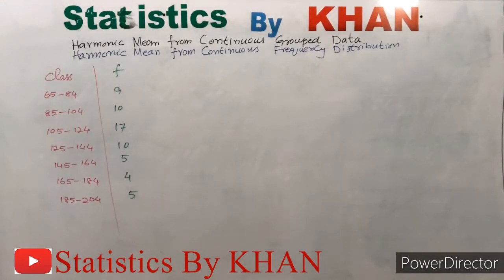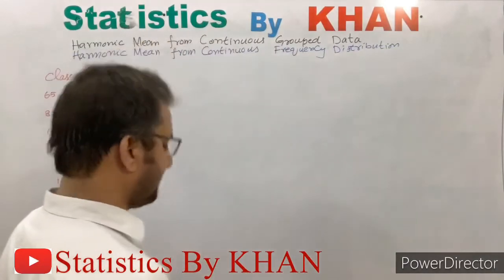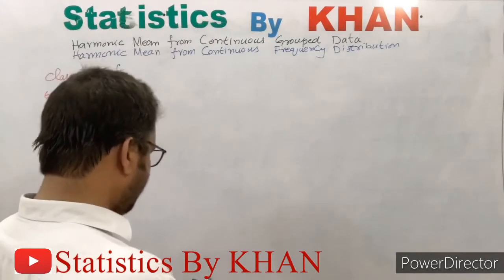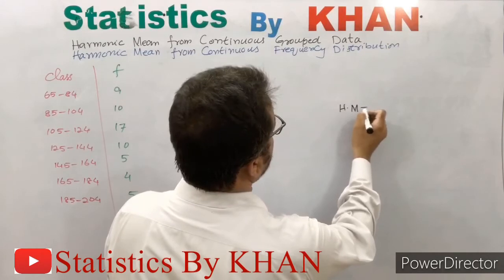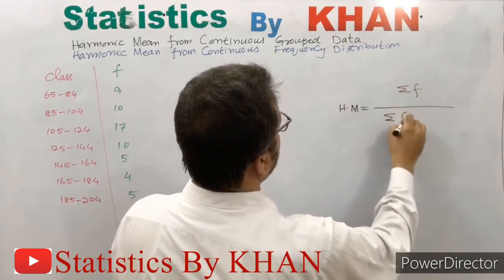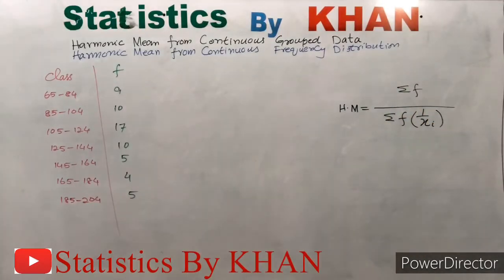First of all, we are writing the formula for harmonic mean from continuous frequency distribution or continuous group data. The formula is: Harmonic Mean = Σf divided by Σf·(1/xi). This is the same formula used for the computation of harmonic mean from discrete group data or discrete frequency distribution.